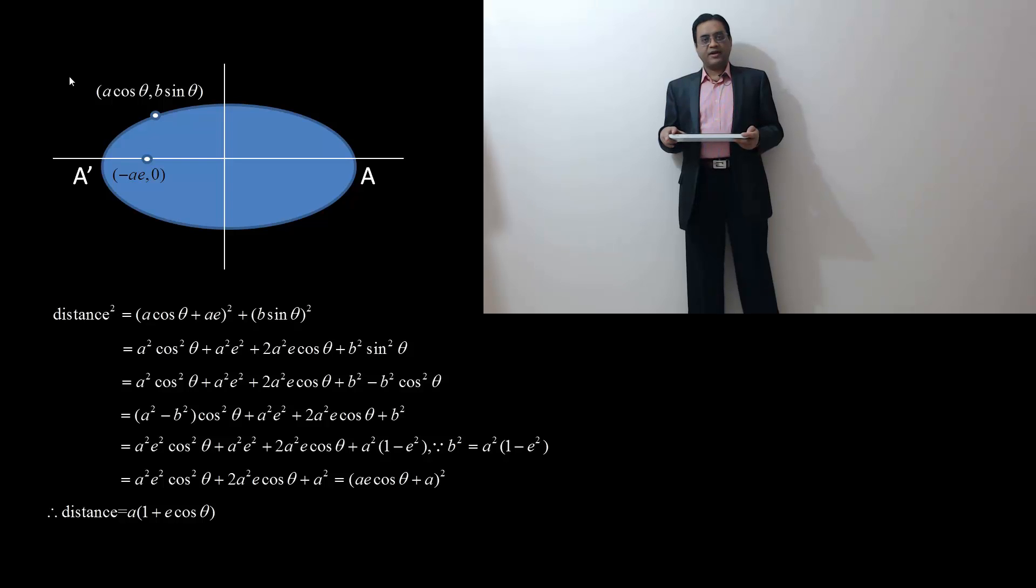Cos θ has minimum value -1. That happens at angle θ = π. That means point A' corresponds to least distance.